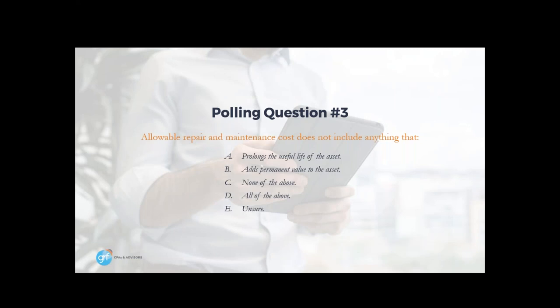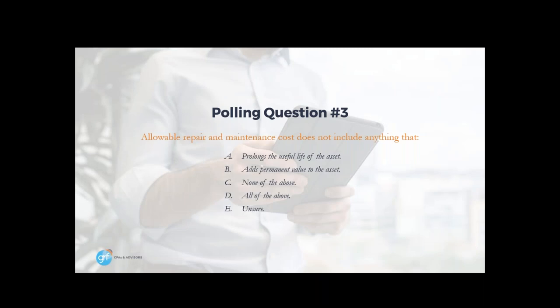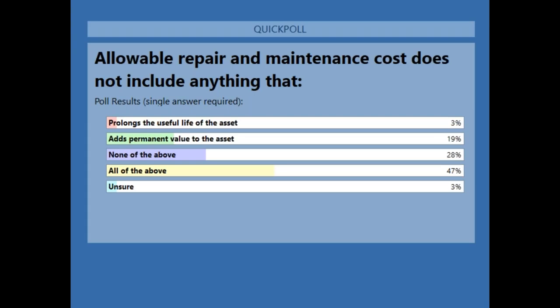Please take a moment to answer the polling question on your screen. While everybody's submitting their answers, the final CPE word is loss — L-O-S-S. Remember, if you want to receive CPE credit, you'll need this word for the survey that follows our webinar. The correct answer is all of the above.